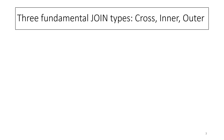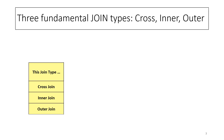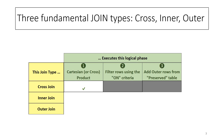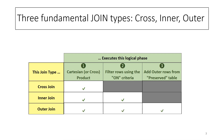There are three fundamental types of join in SQL: cross, inner, and outer. Cross join executes a single logical phase, the Cartesian product. Inner join adds a second logical phase — filter rows using the ON criteria. Finally, outer join adds a third computation phase, which adds outer rows from the preserved table.